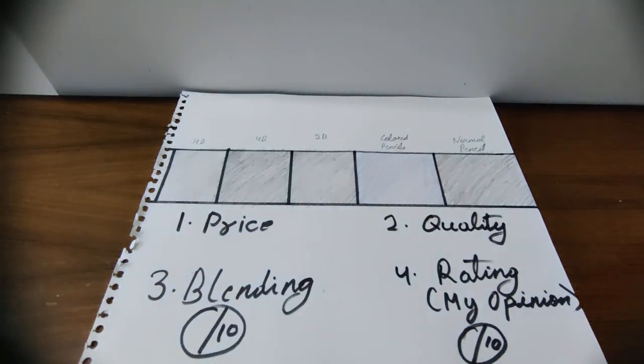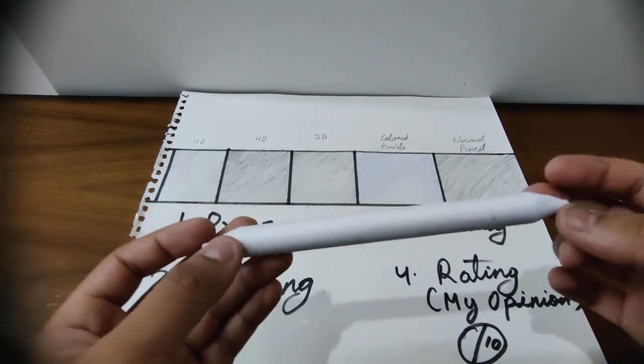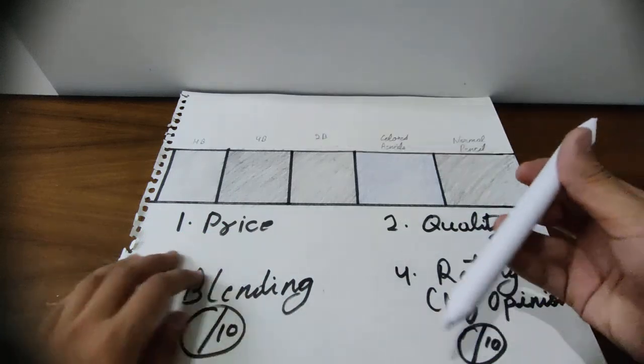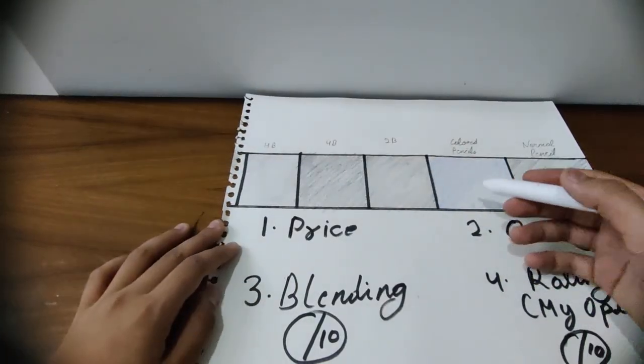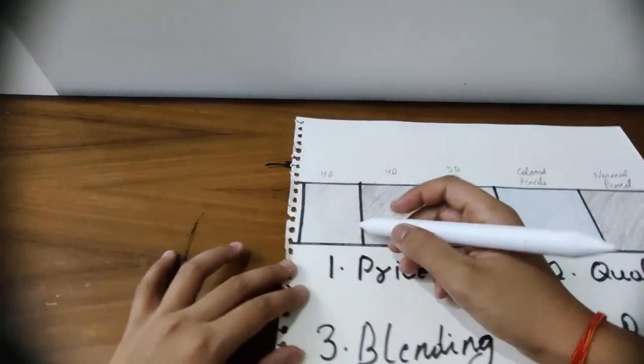So I have finally done with the chart. So let's start blending. I am going to use the largest blending stump, which is number 6. I am going to blend all the pencils with it, including normal pencil. So let's start.